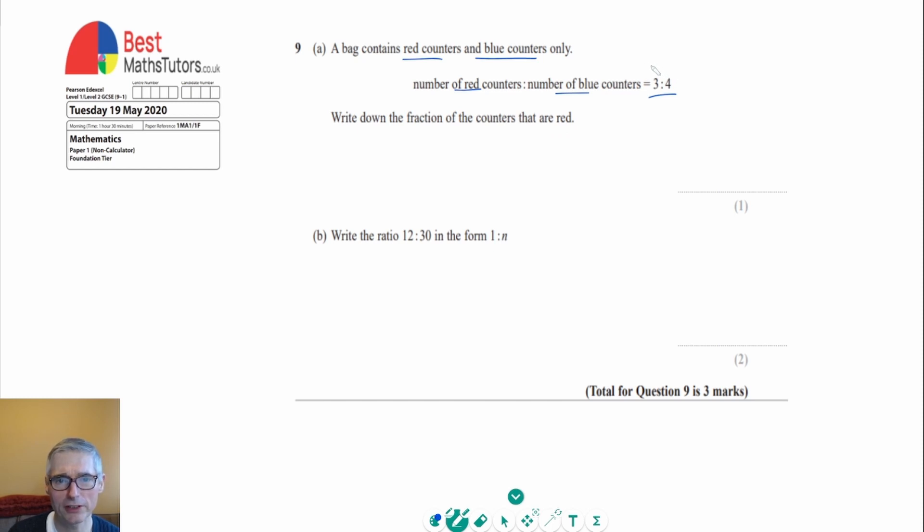We can see that the 3 represents the red and the 4 represents the blue. So we've got 3 out of, which is our fraction, 3 out of the total, and the total is given by the 3 plus the 4.